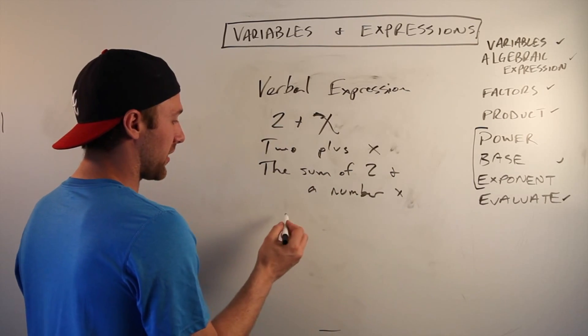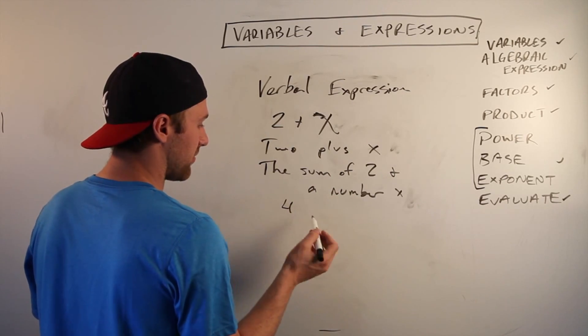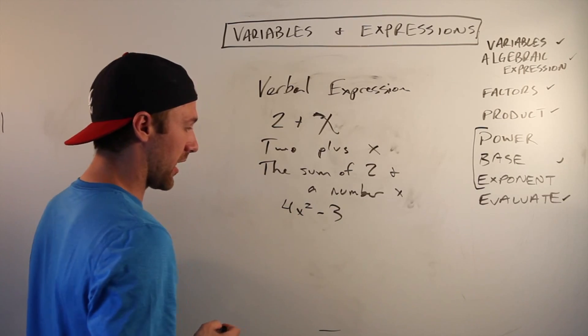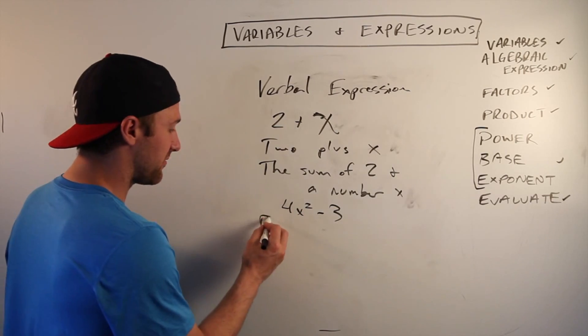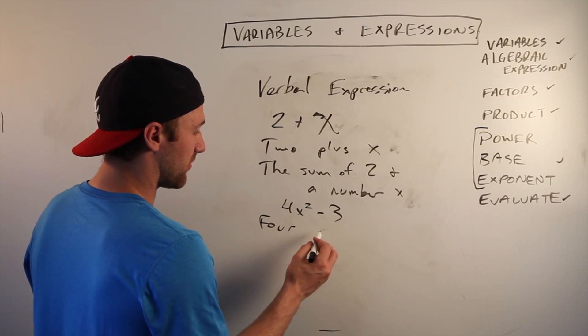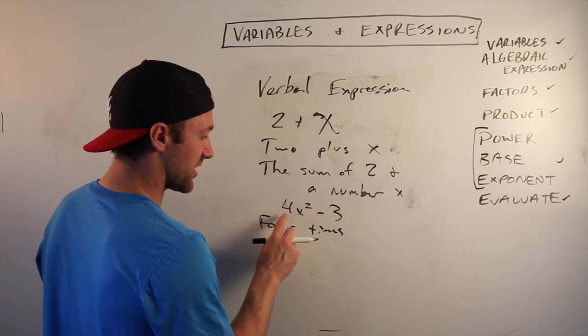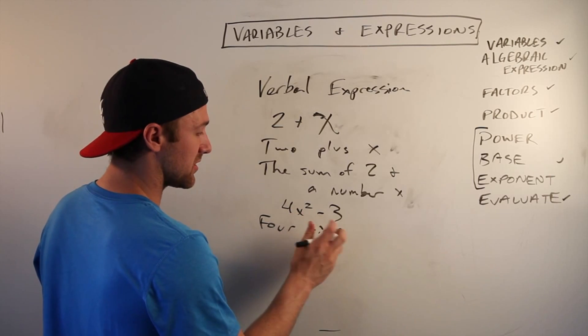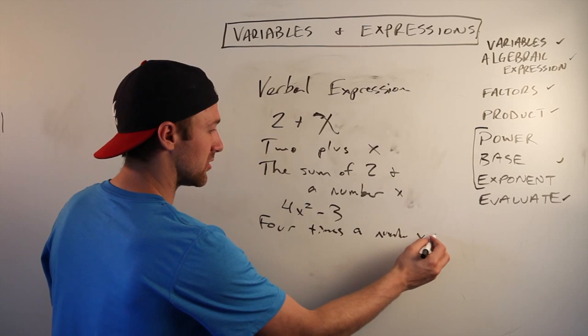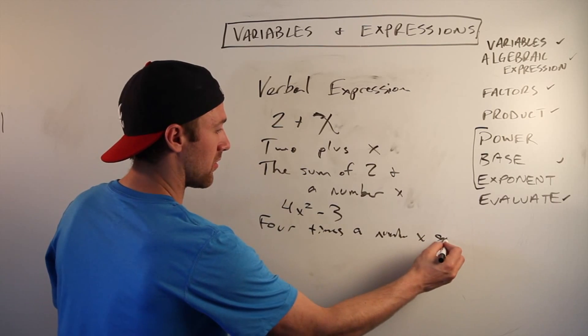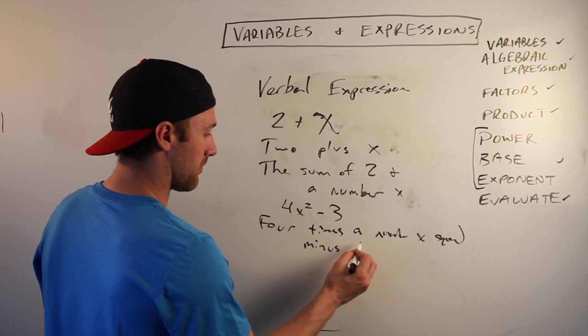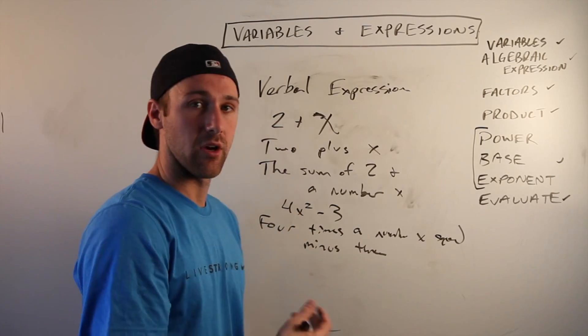Let's do one that's a little more complicated. Let's say we've got four x squared minus three. We could write it out four times, because I'm just taking it one thing at a time, four times a number x squared minus three. That's a verbal expression of that.